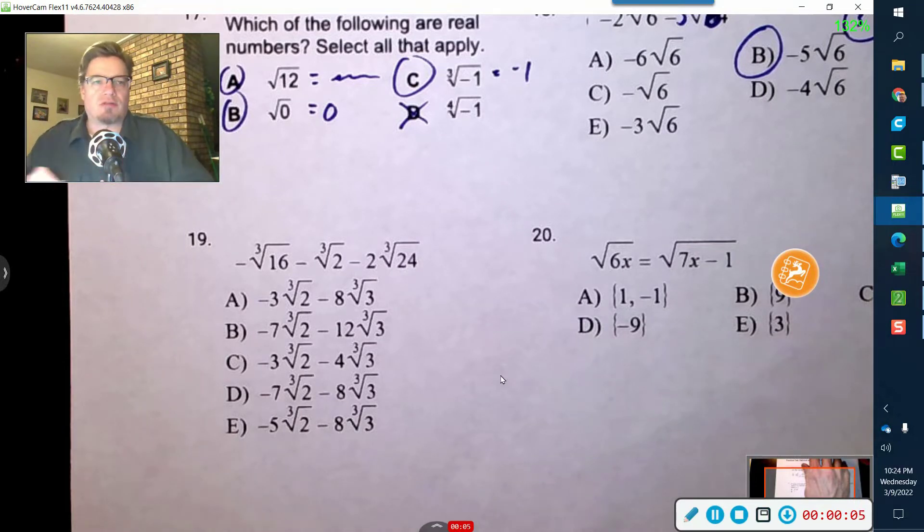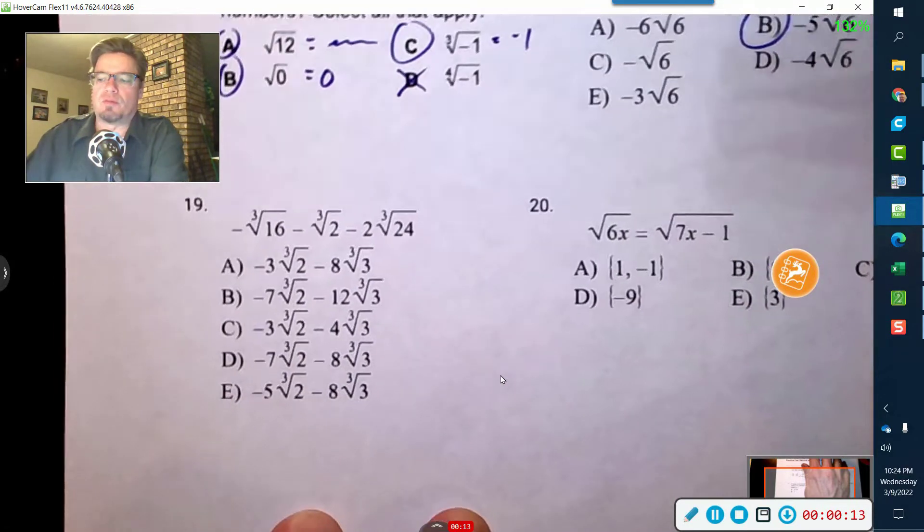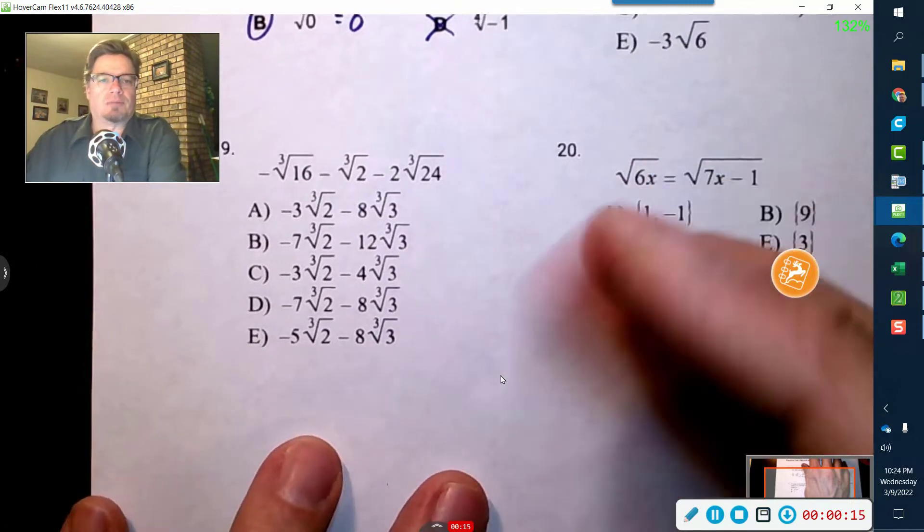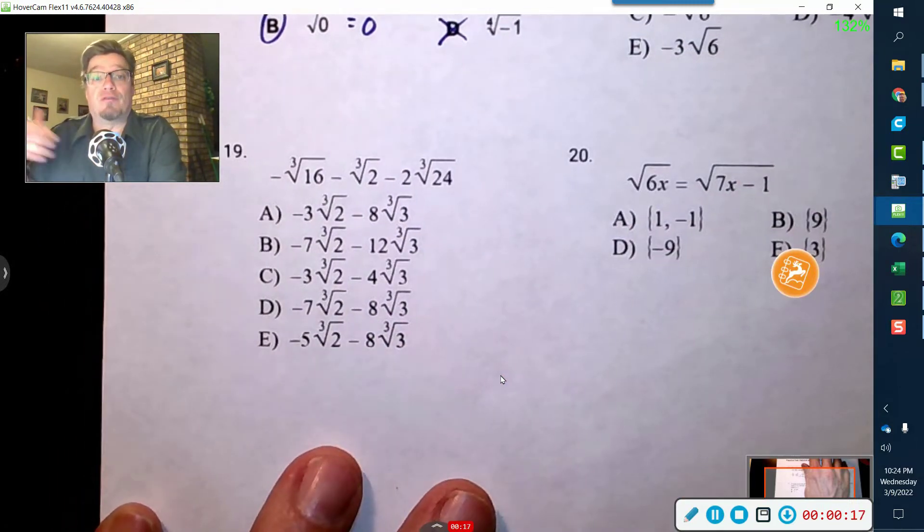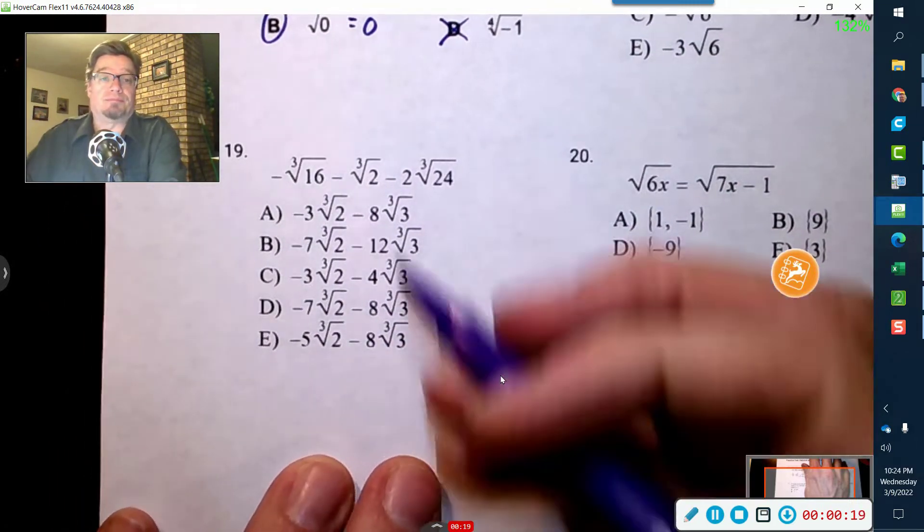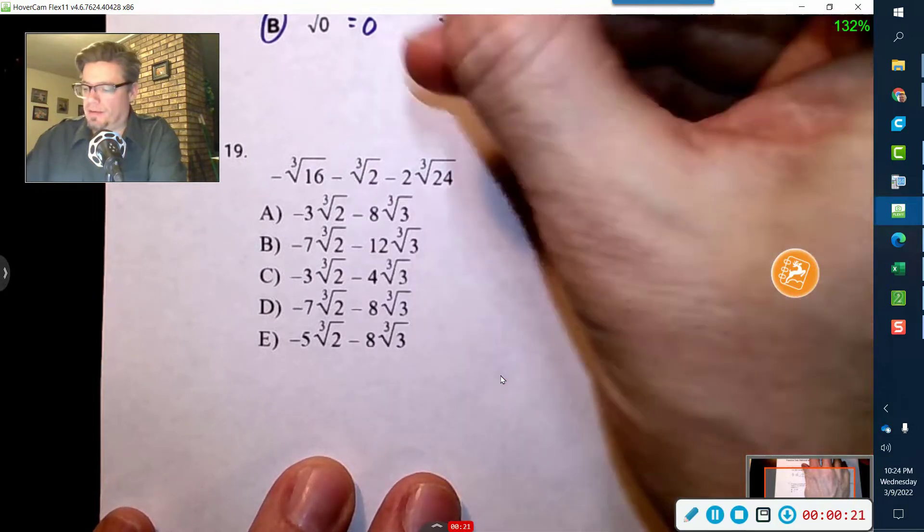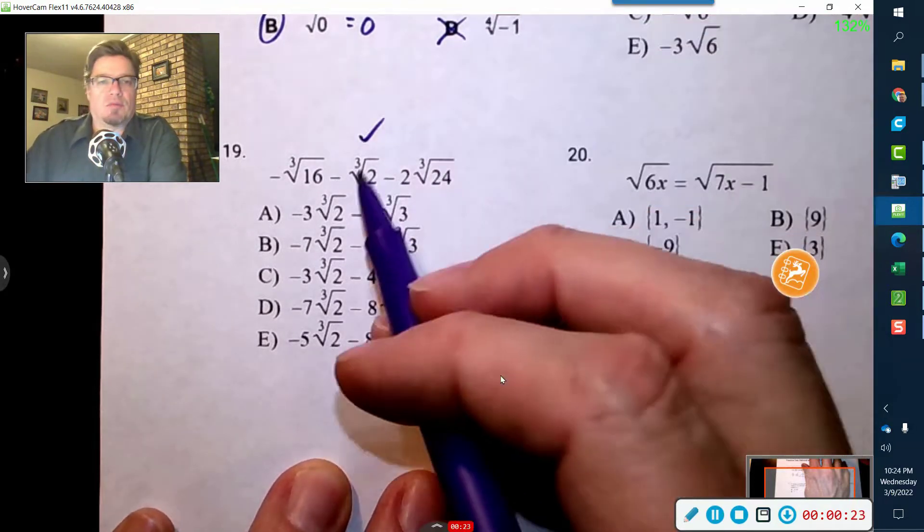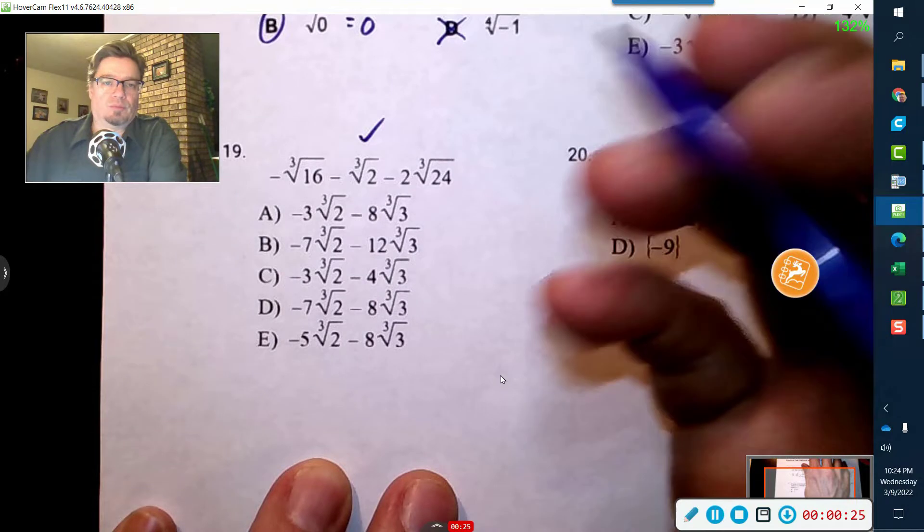All right, adding and subtracting radicals. Now we got cube root, it's okay. The same principle applies, just now triples can be taken out if we can take them out. Now this one is good. We can reduce it for these other two though, we'll check it out.